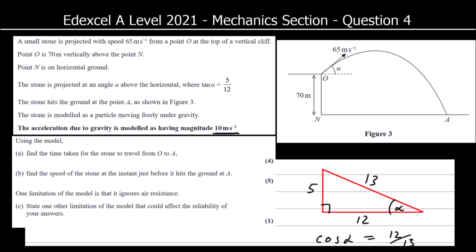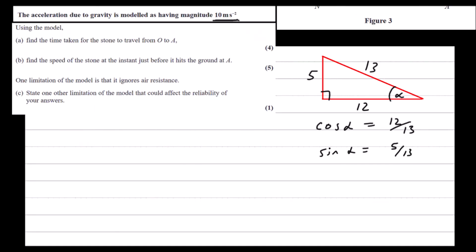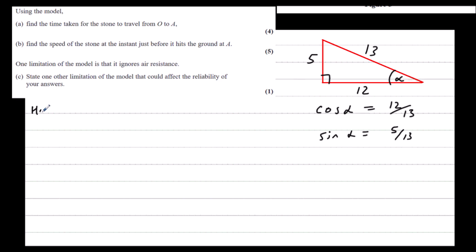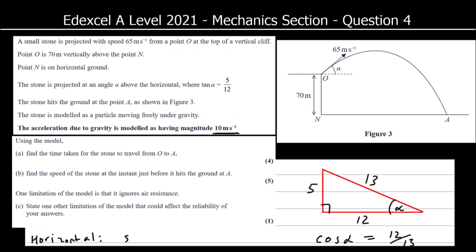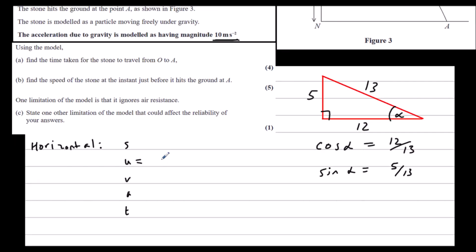So we've got a projectile. We can split this up into horizontal motion and vertical motion. Horizontally, we've got SUVAT. U is 65 cos alpha. V will be the same. It's got no acceleration horizontally.